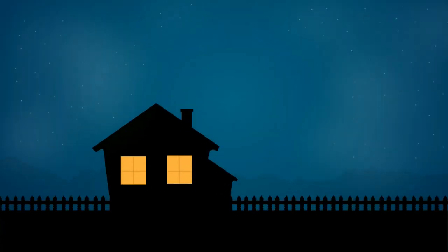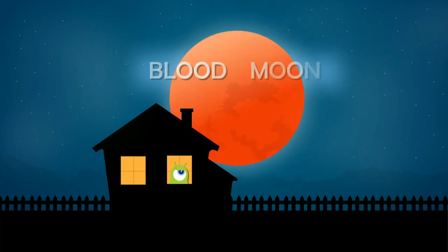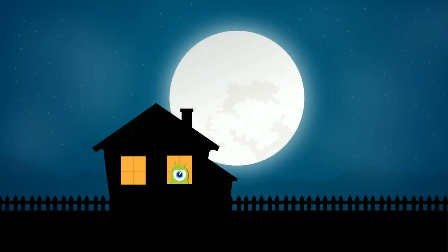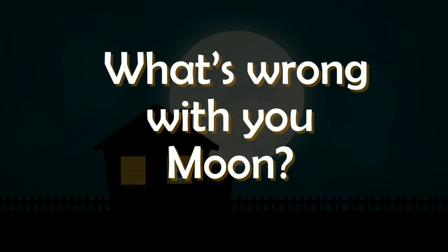You might have noticed that during a total lunar eclipse, our moon appears red, and we call this a blood moon. But what causes it to change its color to red? And if it does, why not some other color, like maybe blue? Or why not just keep on shining white as it does every time? What's wrong with you, blood moon? Let's find out.